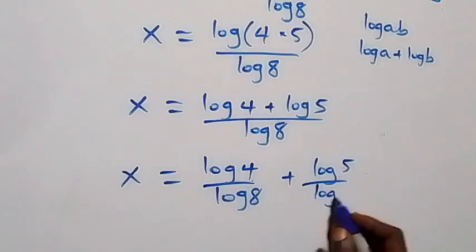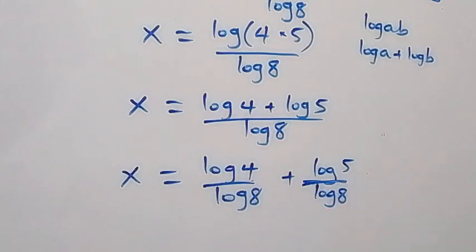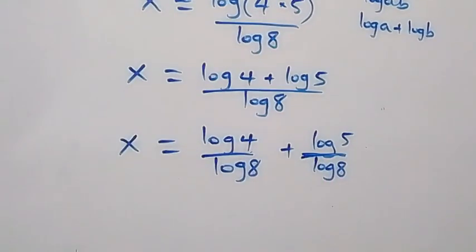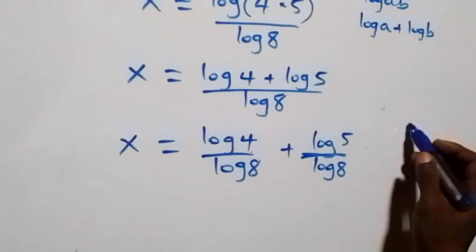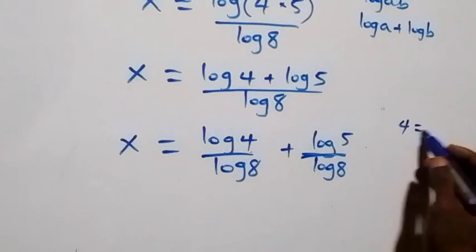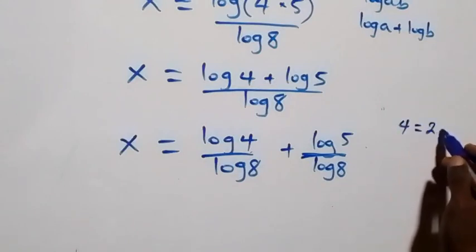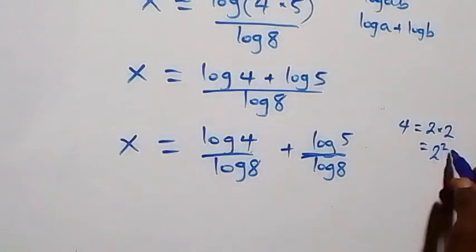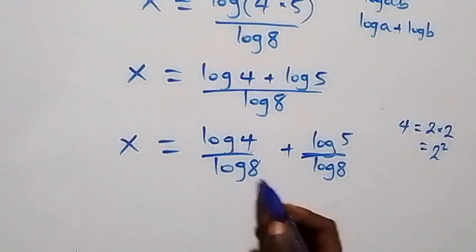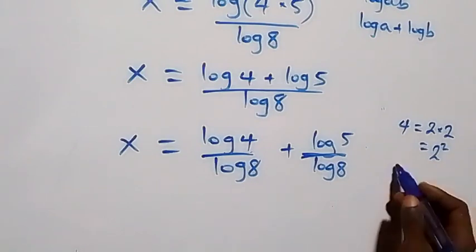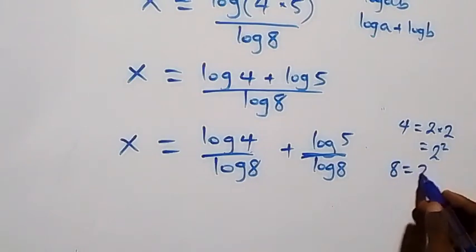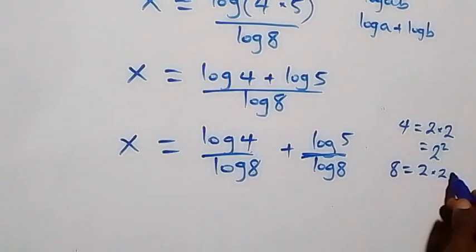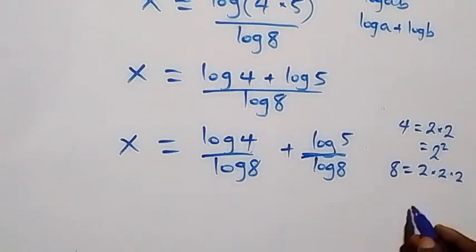From here, we can write 4 as 2 times 2, which is 2 squared. Also, 8 can be written as 2 times 2 times 2, which is 2 raised to power 3.